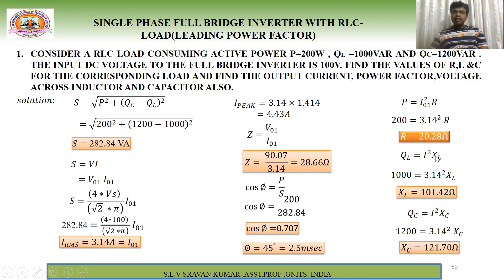To find XL and XC: QL = I²·XL → 1000 = (3.14)²·XL → XL = 101.42 Ω. Similarly, QC = I²·XC → XC = 121.70 Ω.